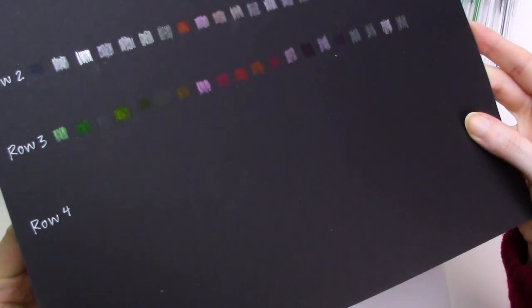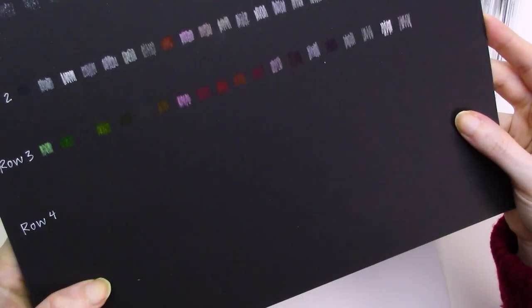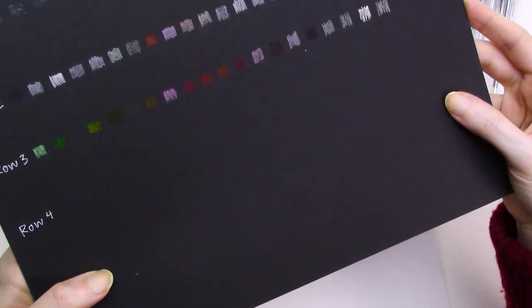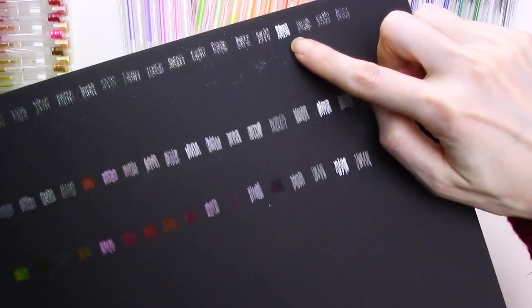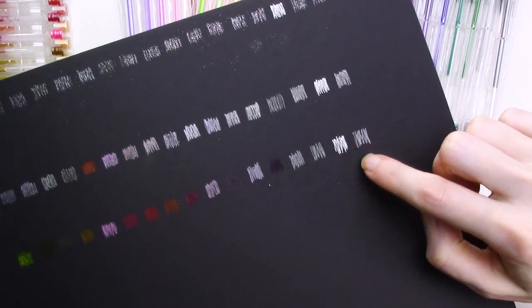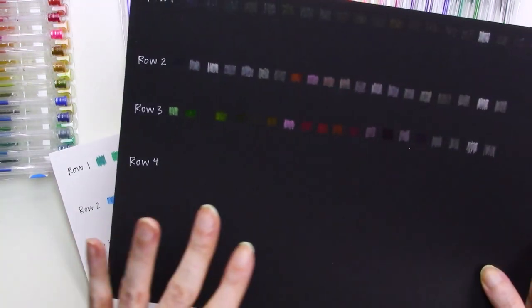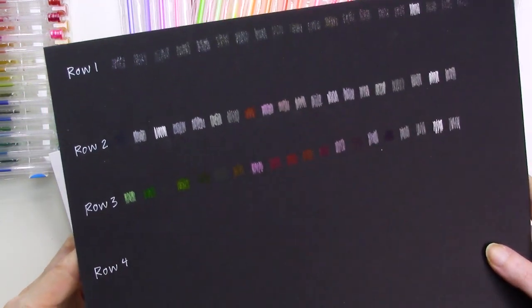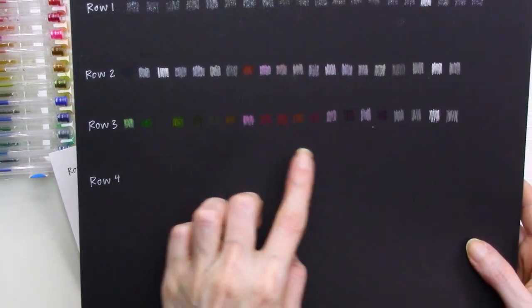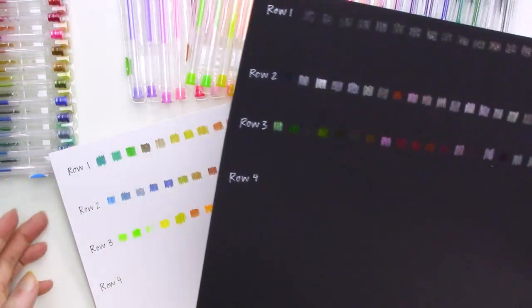While I really like how the neons and pretty much all of the colors in this row look on the white cardstock, again, I was disappointed that they weren't more opaque on the black cardstock. You can still see them though, so they're more opaque than the glitter pens from the first row, but generally less opaque than the metallics from the second row. There is a metallic silver that's the next to last swatch from the right that is the most opaque from this row.